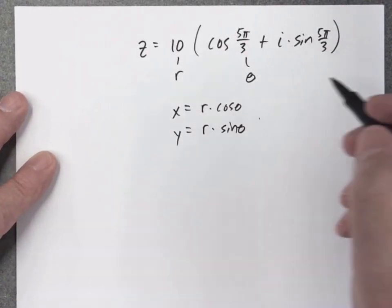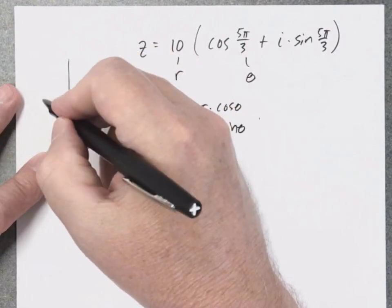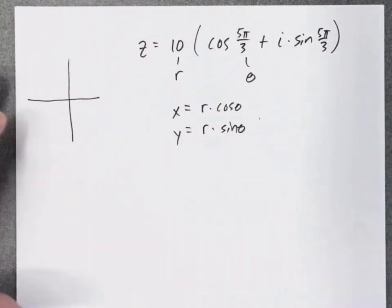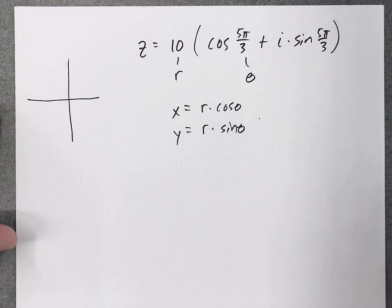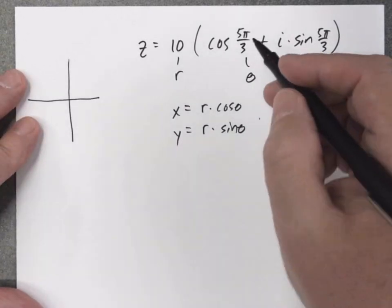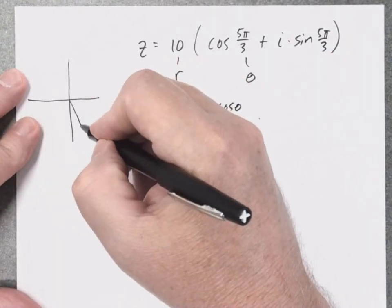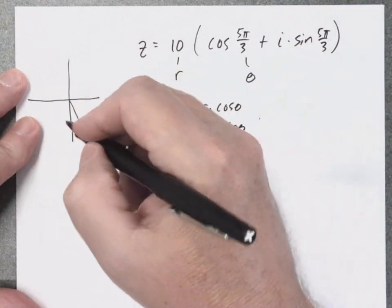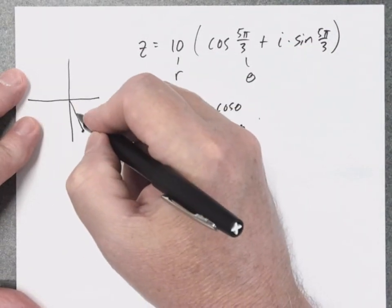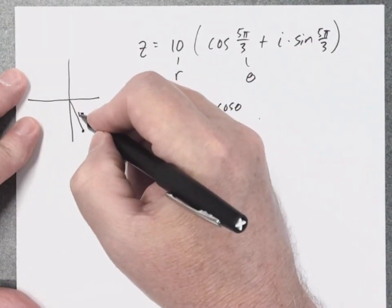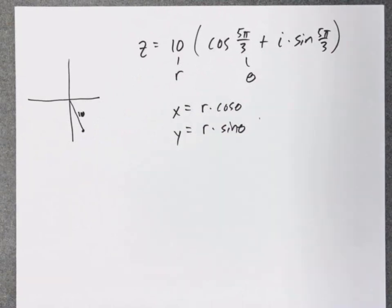Now as a sanity check, I'm going to go and graph this point. So when I do this, I'm going to make sure I didn't make any mistakes. So 5 pi over 3 is down here. If we call this distance 10, I should be down here in the fourth quadrant.